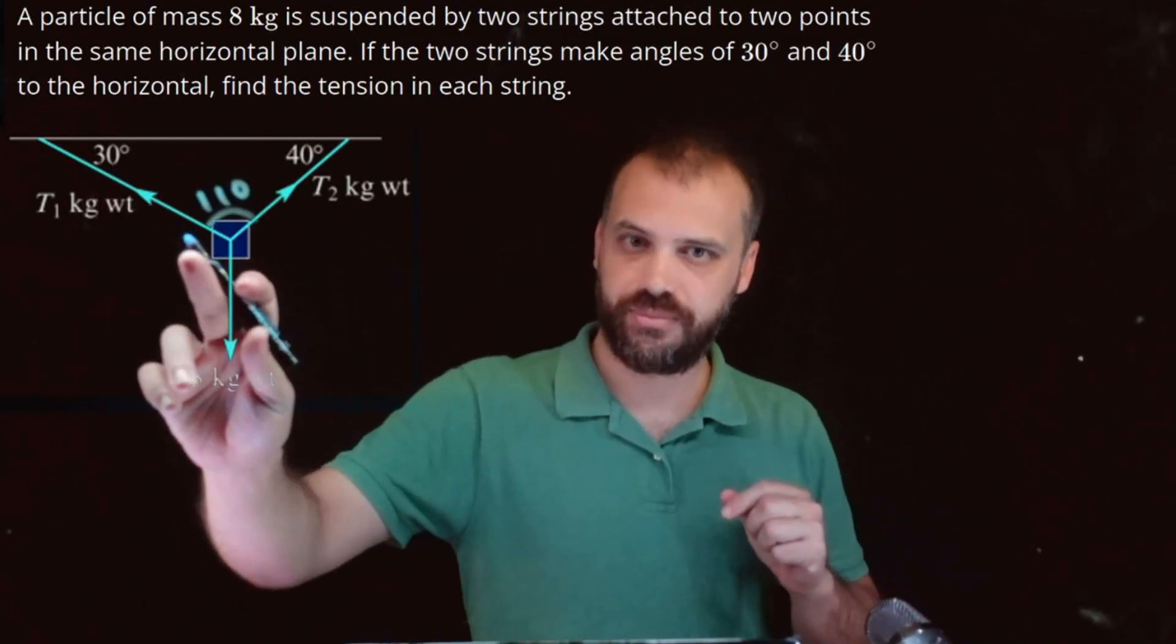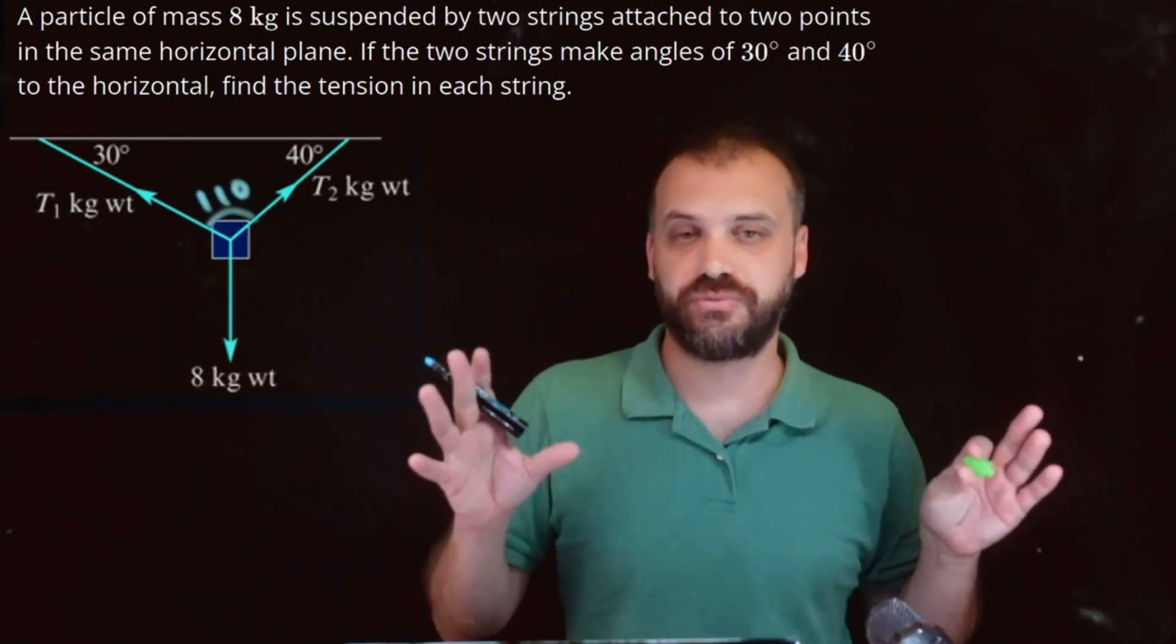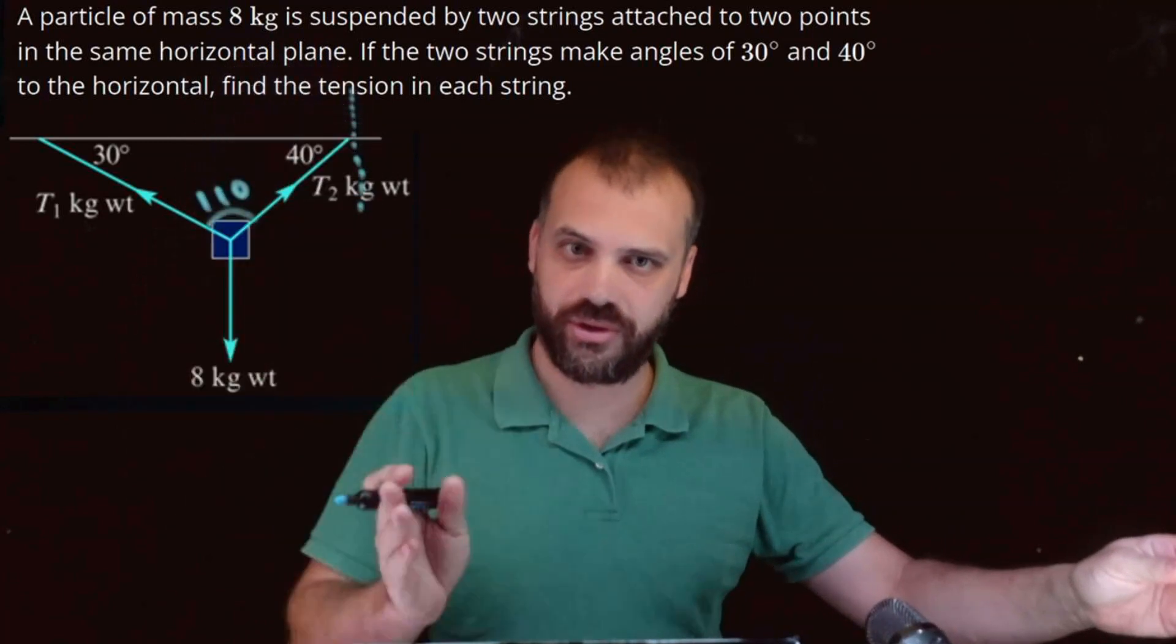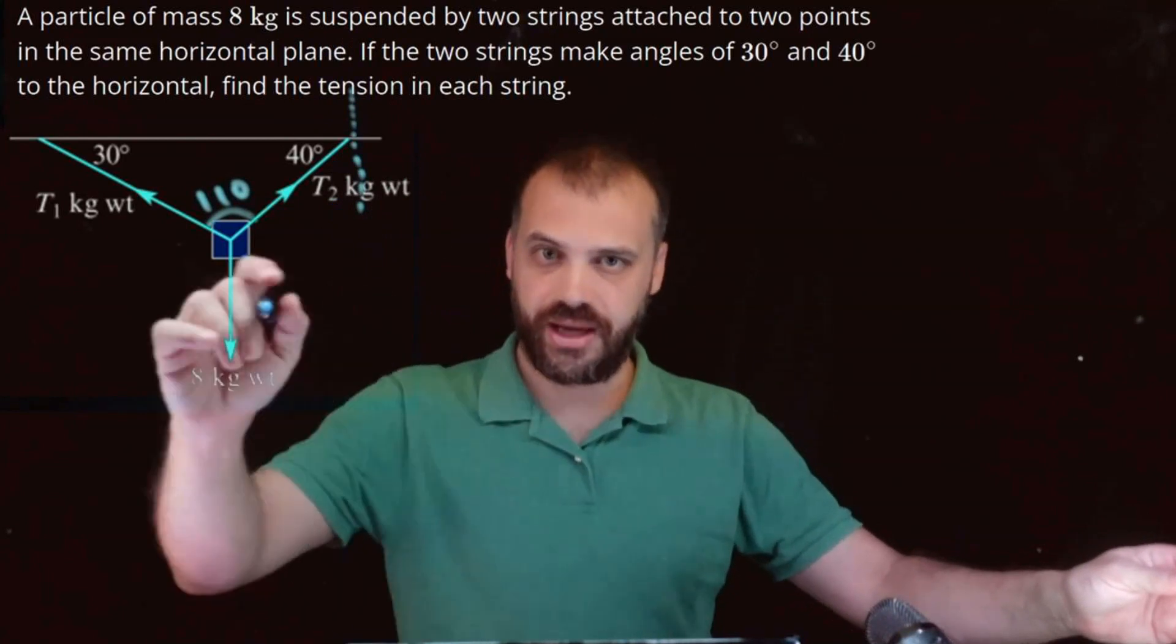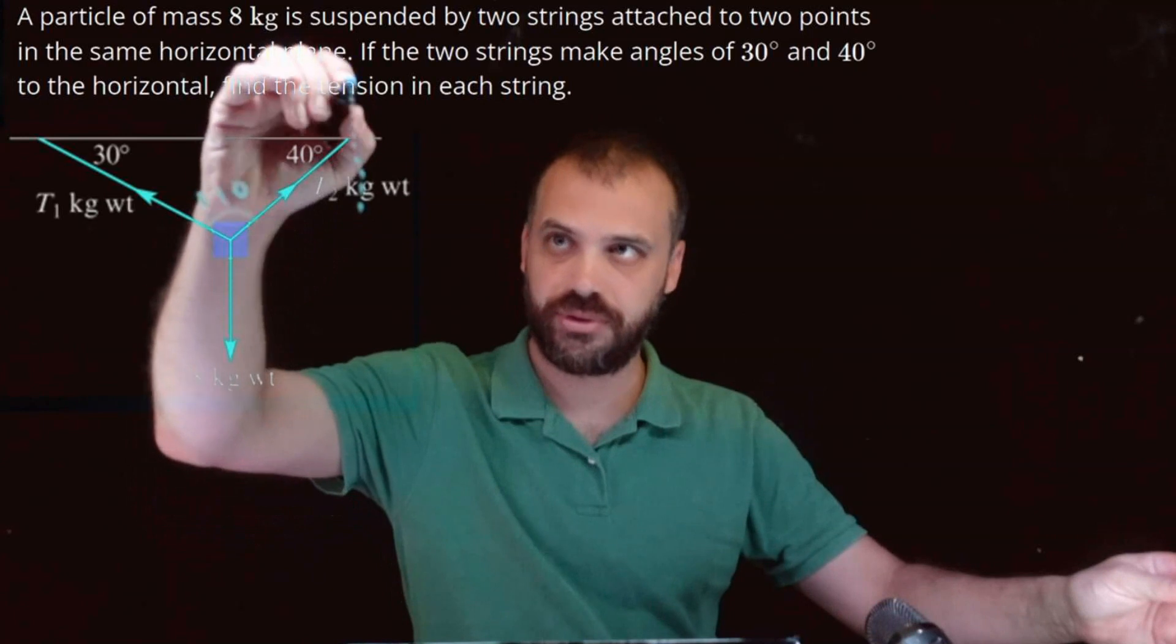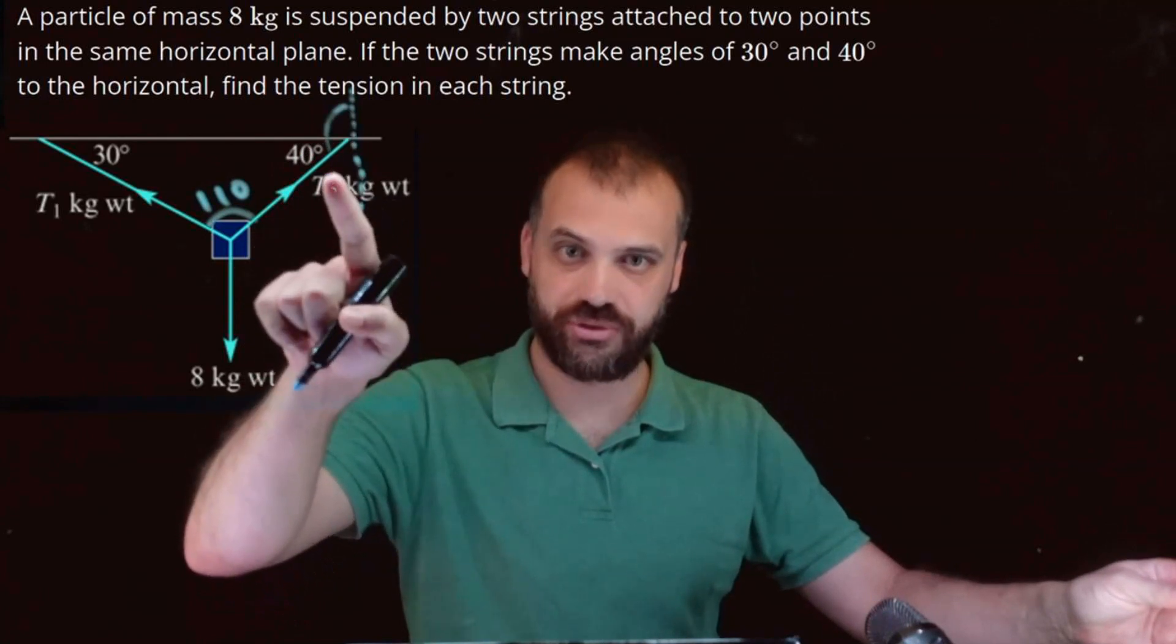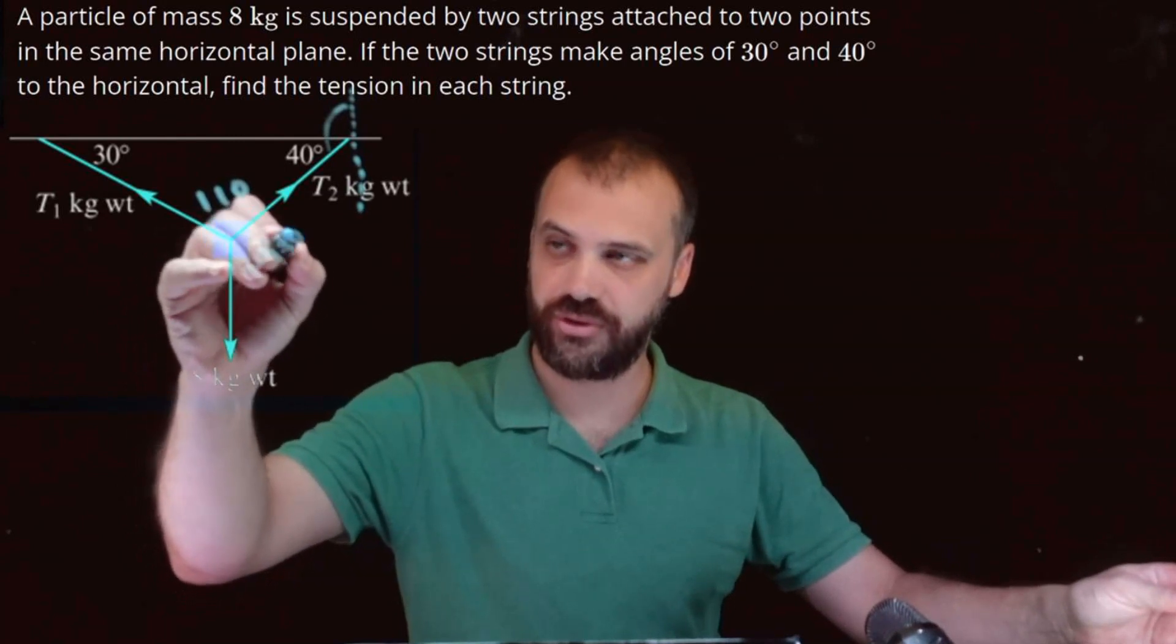Now, this angle here and this angle here, there's a multitude of ways that you can figure it out. But the way that I'm going to do it is I'm going to draw like a line down there that is parallel to that line there. And then I can use the Z rule to know that this angle, which is 40 plus 90, which is 130, is equal to that angle there, 130 degrees.